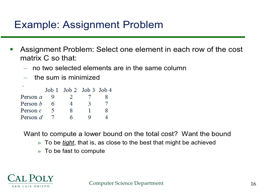We want the bound to be tight — as close to the best that might be achieved — and we want it to be fast to compute, because we're searching a very large state space tree and don't want to spend a lot of time computing the bound. There are trade-offs: the tighter the bound, the more you can give up on speed. But ideally you'd like it to be both tight and fast to compute.